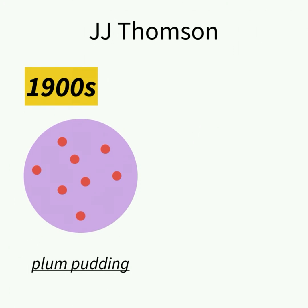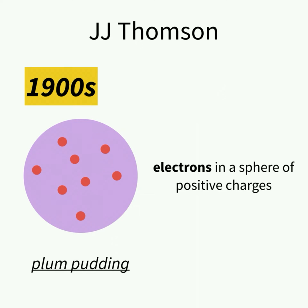Then in the 1900s, a scientist named J.J. Thompson came up with a plum pudding model. In his model, he postulated that electrons, as shown as the red circles, lie in a sphere of positive charges, as shown in the purple circle. Like plum pudding, the electrons would be found within the sphere of positive charges like you would find plums in the pie shell.